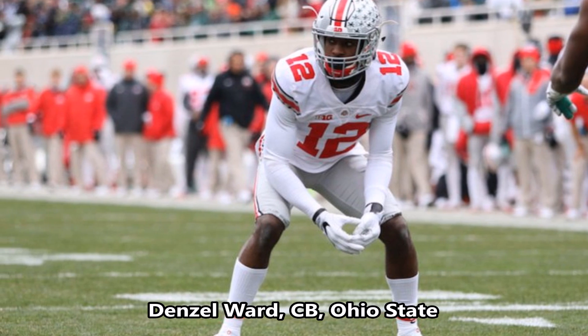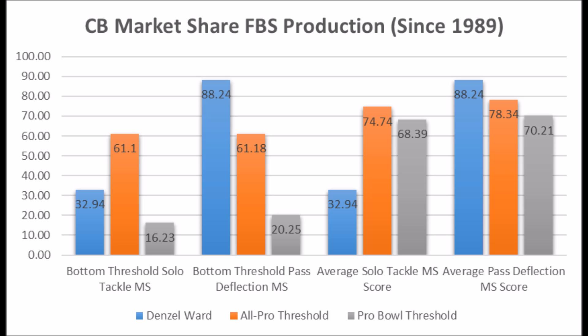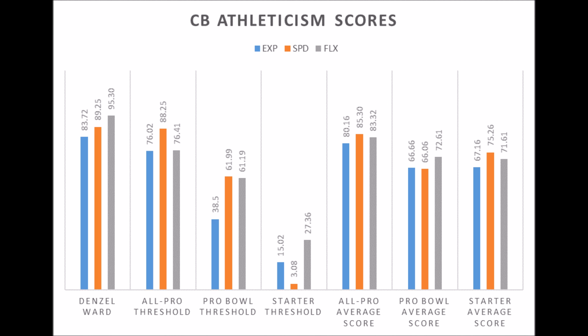Next is Denzel Ward, cornerback out of Ohio State. His production data is decent — not amazing in solo tackle data — but does hit above the Pro Bowl threshold. He has very good pass deflection data at 88.24 out of 100, which hits above the average for all-pro and Pro Bowl cornerbacks since 1989. His athleticism traits are 83.72 explosive/body strength score, 89.25 speed score, and 95.30 flexibility — pretty much all the traits of a multiple all-pro cornerback, with the exception of length. 100% of multiple all-pro cornerbacks since the 1999 draft class had at least 32-inch arm length, and Ward doesn't quite have that, which caps his upside.